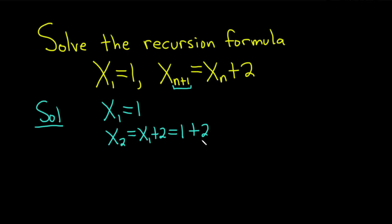You can write it as 3 if you want to. I'm going to leave it like this. So let's look at X sub 3. In this case when 3 is equal to n plus 1, that means that n is 2. So this is X sub 2 plus 2. So that's going to be equal to, well X sub 2 was 1 plus 2, so this is 1 plus 2 plus 2.